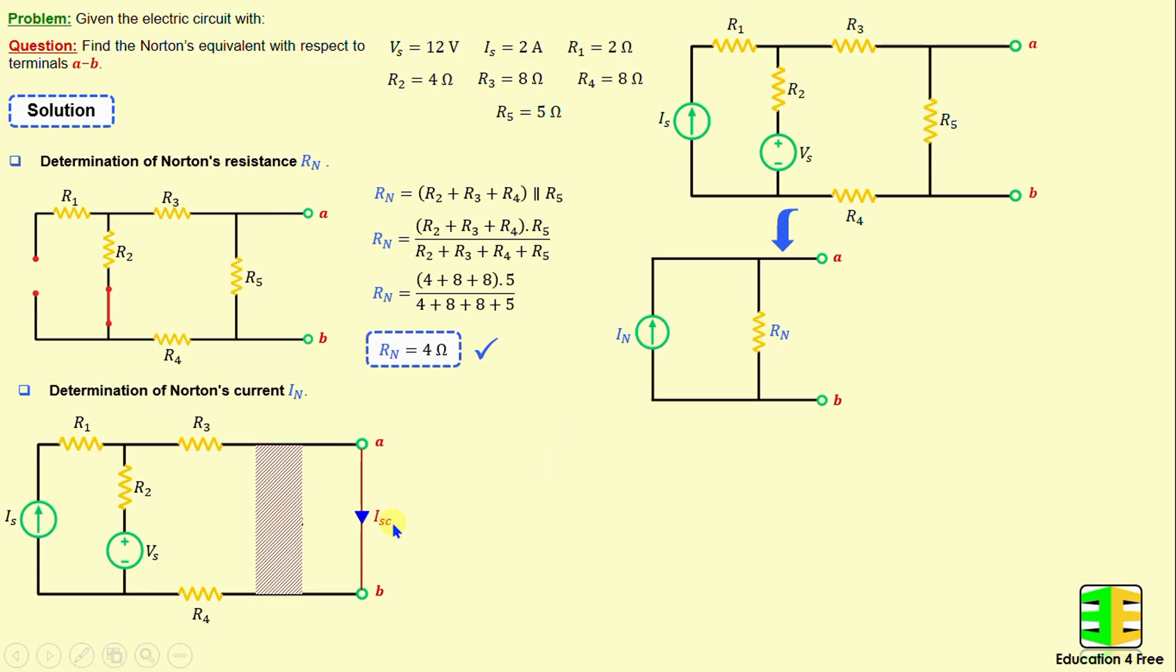To find the short circuit current ISC, I will apply the mesh analysis method. It's evident that there are two meshes: this is mesh number one, and this is mesh number two. I will consider IA as the current in mesh one, and IB as the current in mesh two. In mesh one, we can write IA is equal to IS. That means IA is equal to 2 amps.